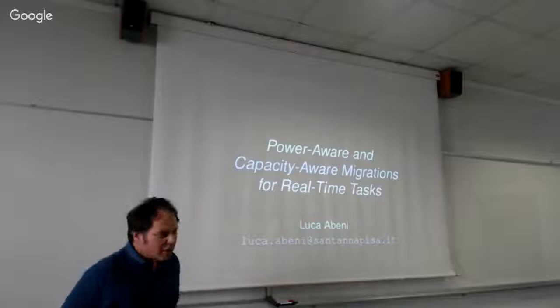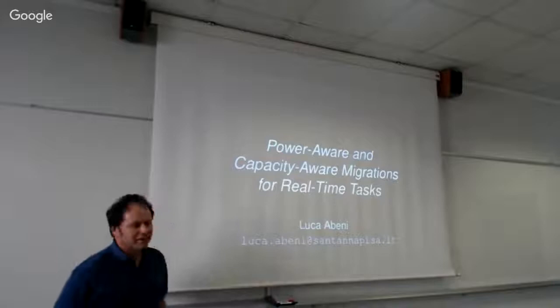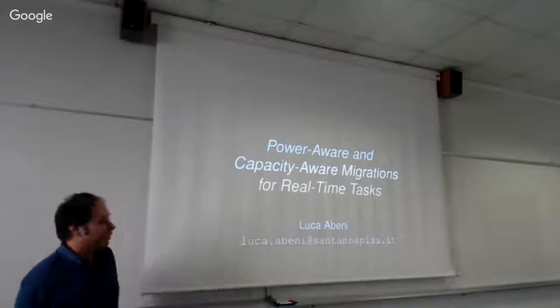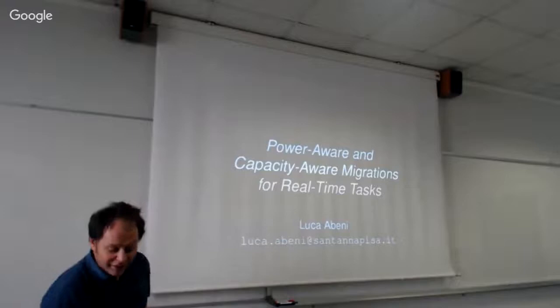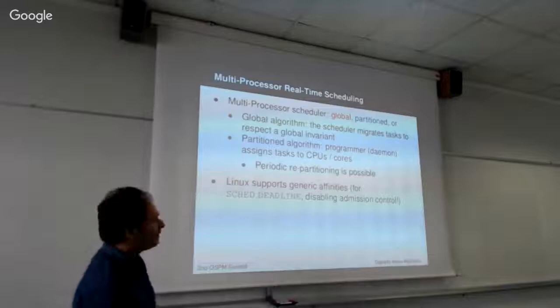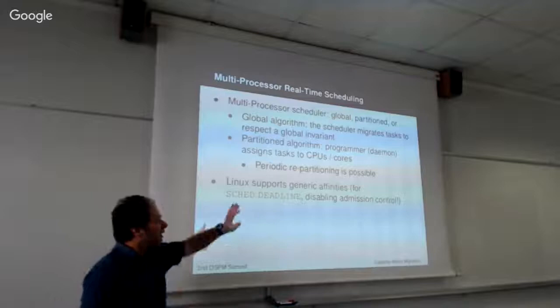I'm going to talk about the main issues I found when trying to make the migration code for SCHED_DEADLINE aware of different CPU capacities and different CPU frequencies. Today I will have a lot of questions and no answers, so maybe the presentation will be useful to clarify ideas, at least for me. First, a little introduction: this is about real-time scheduling — scheduling of tasks characterized by some temporal constraint — and real-time scheduling on multiple processors.